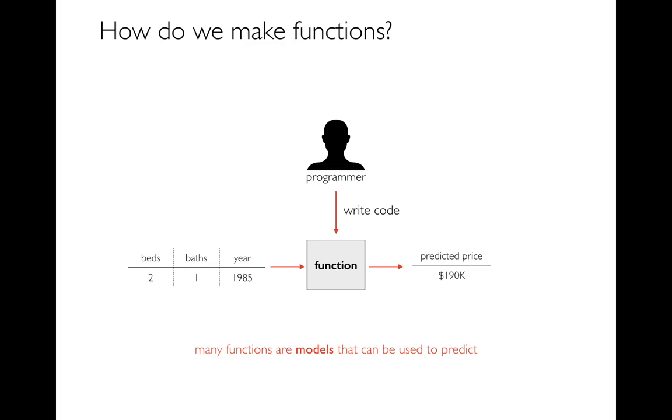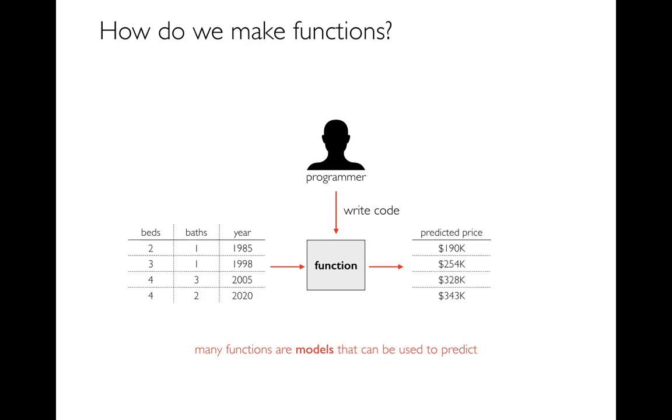So many functions are used as models, and it turns out that when we are using these functions as models, there's other ways that we can generate our function than just writing a bunch of code by hand. You can see that here I have an example where I have many different rows fed into the function and then many different outputs. Instead of writing these by hand, we could automatically generate them with some sort of machine learning algorithm. When we're generating a function from some algorithm, that's called training. We're training the model.